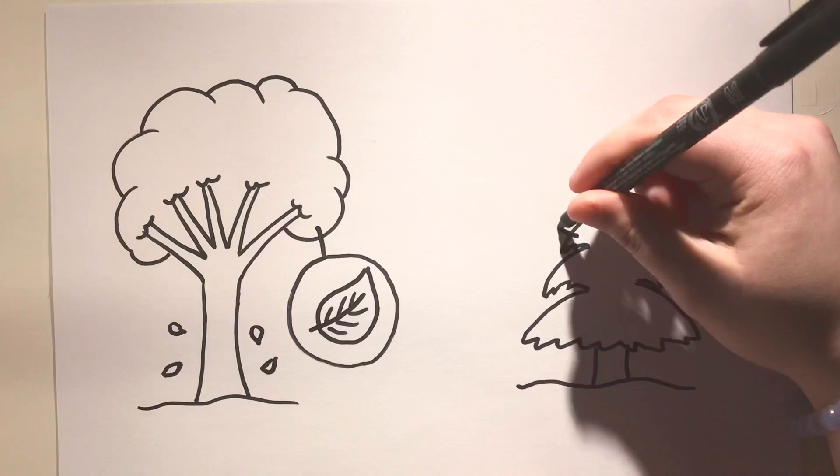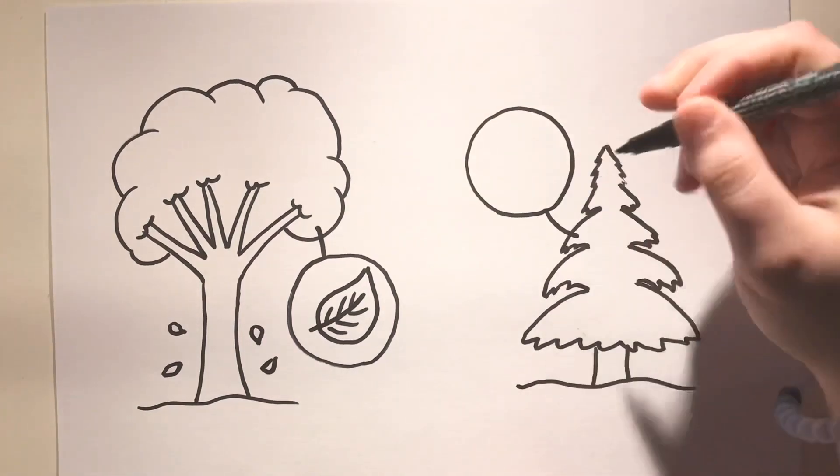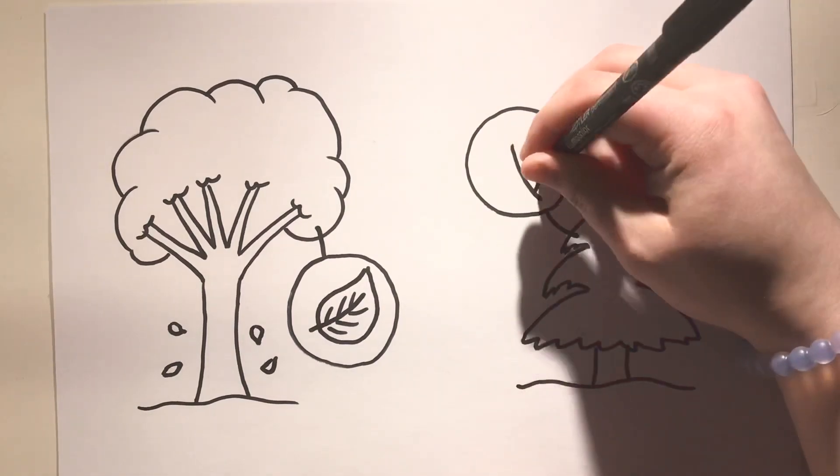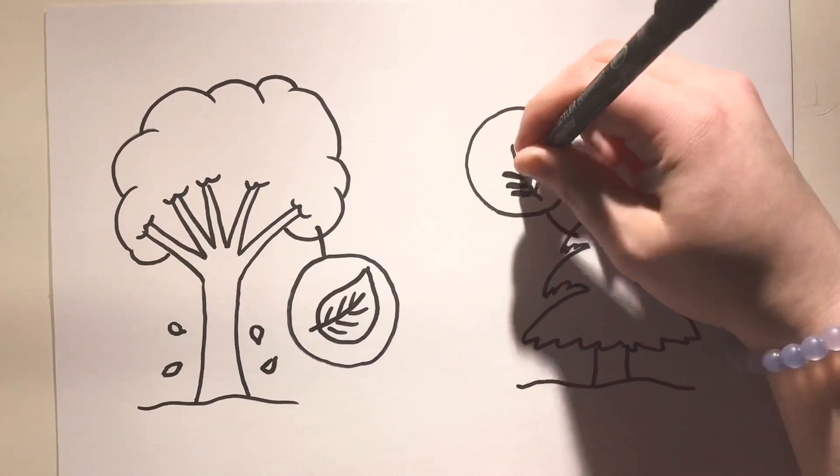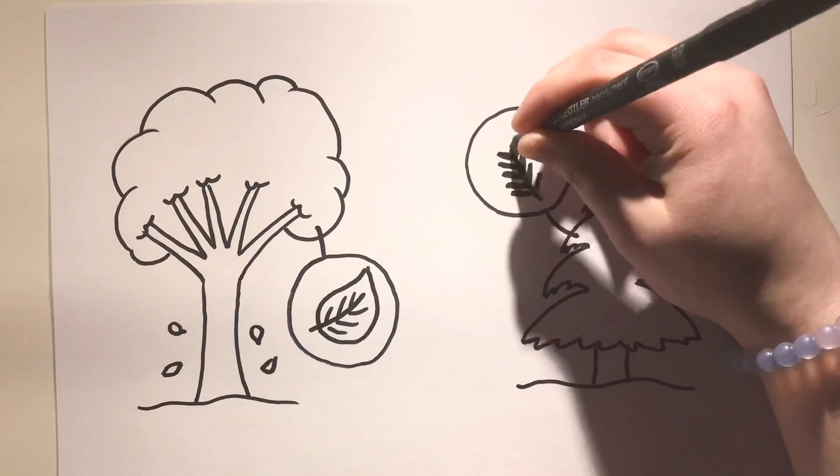Conifers do not drop their leaves and they always remain green. And that's why conifers are called evergreens, because they are forever green.